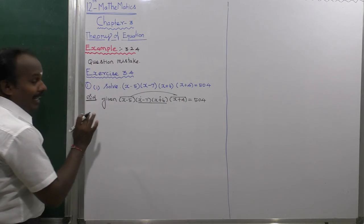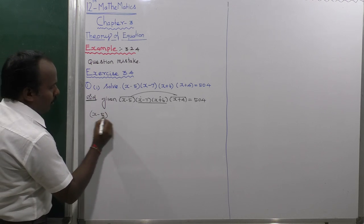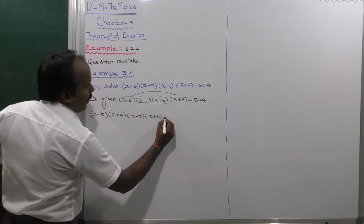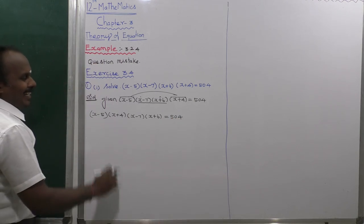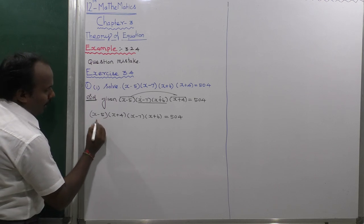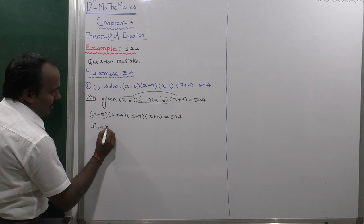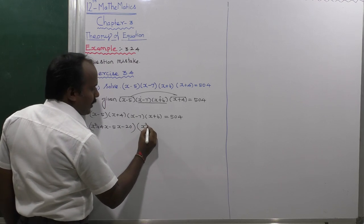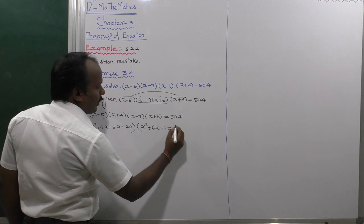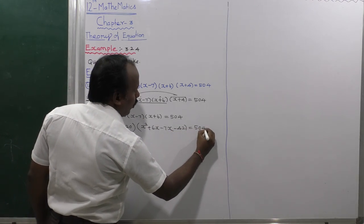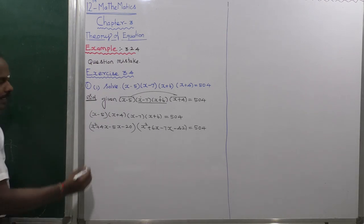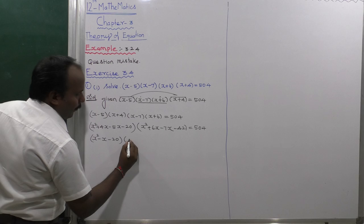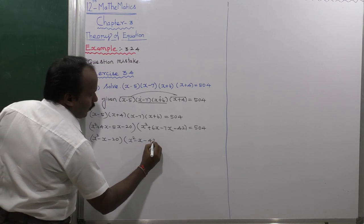So rearranging the given equation as: (x minus 5)(x plus 4) times (x minus 7)(x plus 6) equals 504. Expanding the first pair: x squared plus 4x minus 5x minus 20, giving x squared minus x minus 20. Expanding the second pair: x squared minus x minus 42.